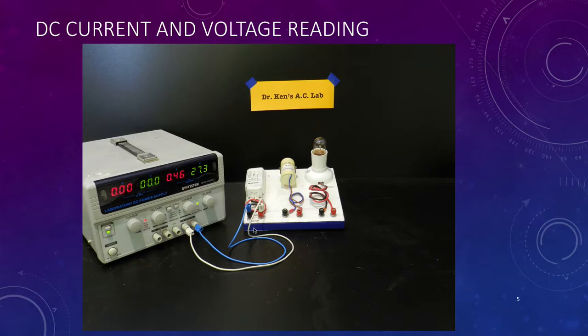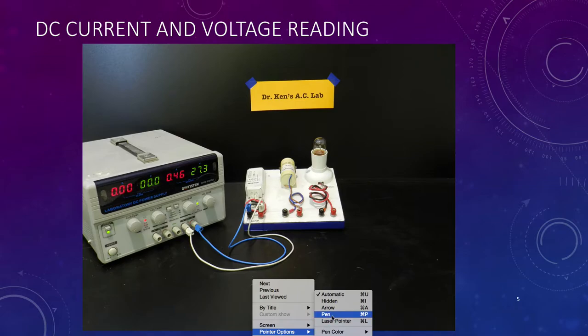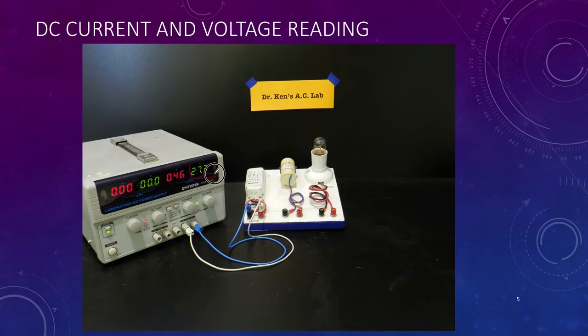Here's the first step, nice and simple. We measure the current and voltage. You can see 27.3 volts on the display, and our current is running at 0.46 amps or 460 milliamps.